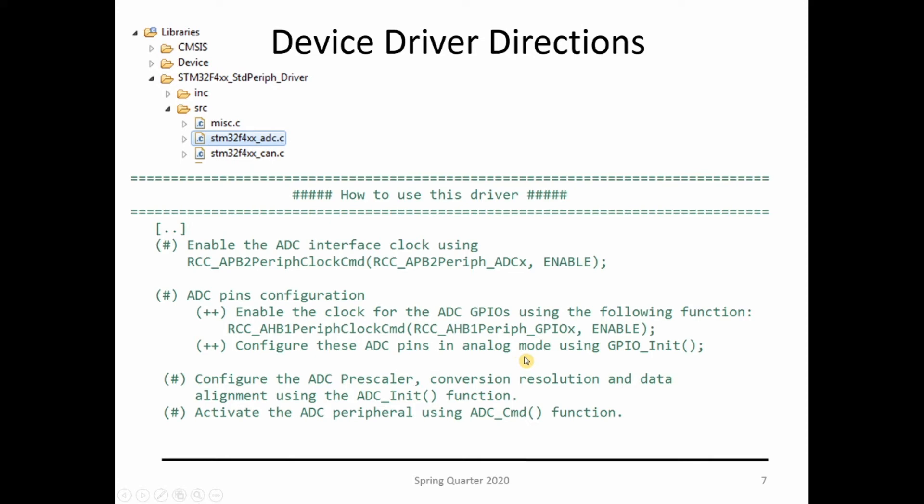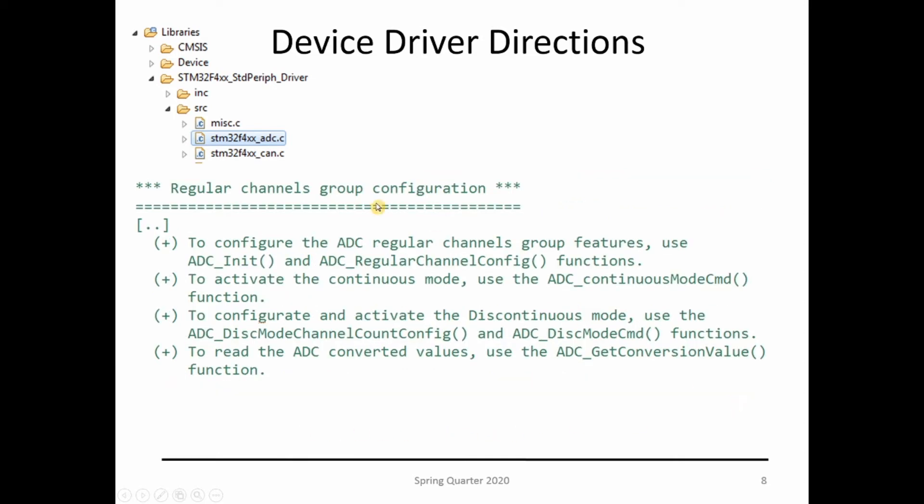You need to configure the ADC prescaler, initialize everything, and activate the ADC by applying the ADC command. Another thing you need to do is configure the channels: you pick the pin, but then use regular channel config to tell which channel you're redirecting your pin on the multiplexer.